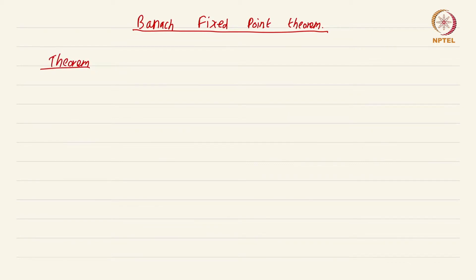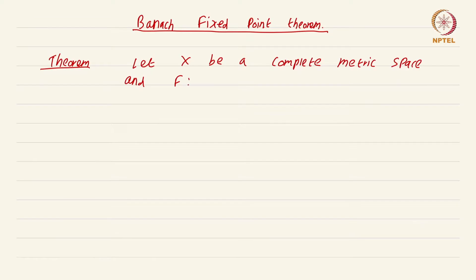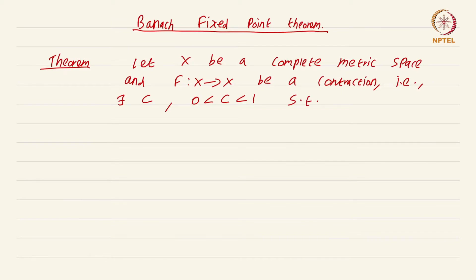The setting is a complete metric space. Let X be a complete metric space and f from X to X be a contraction. This just means that there exists a constant c with 0 < c < 1 such that d(f(x), f(y)) is less than or equal to c times d(x, y).